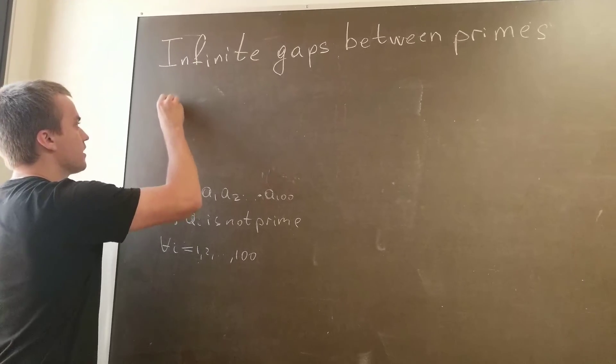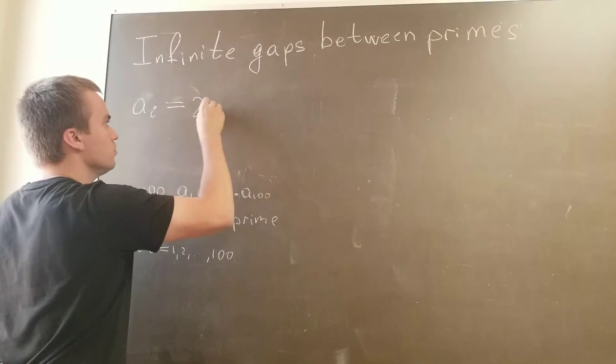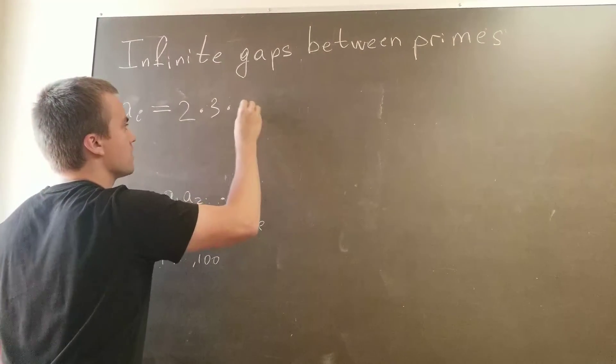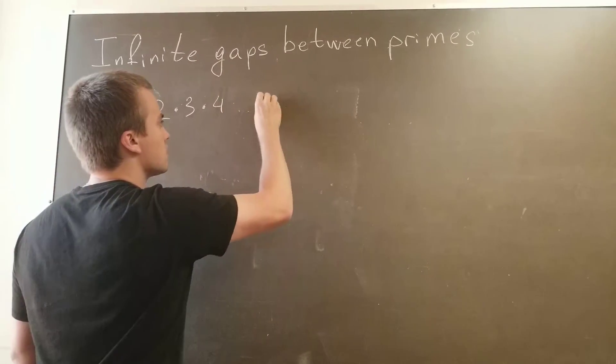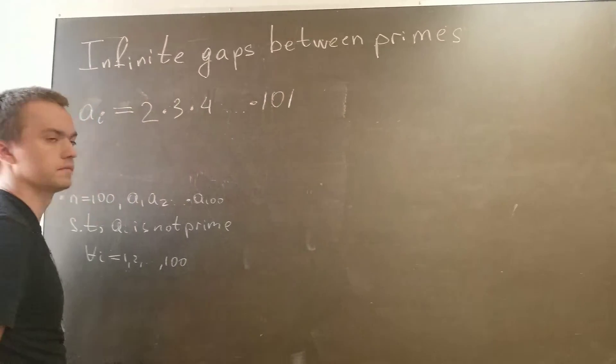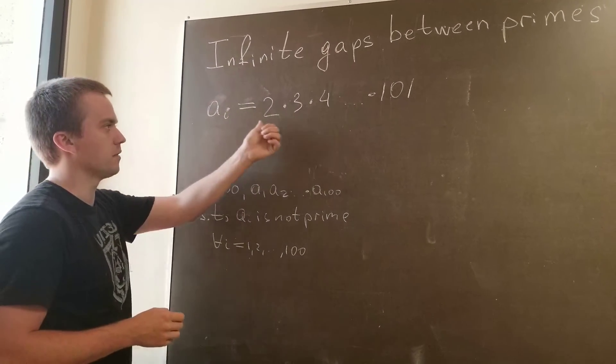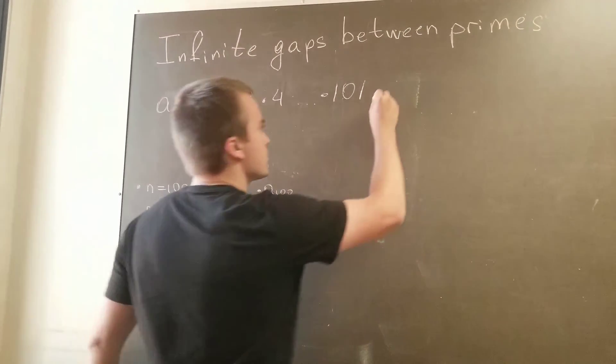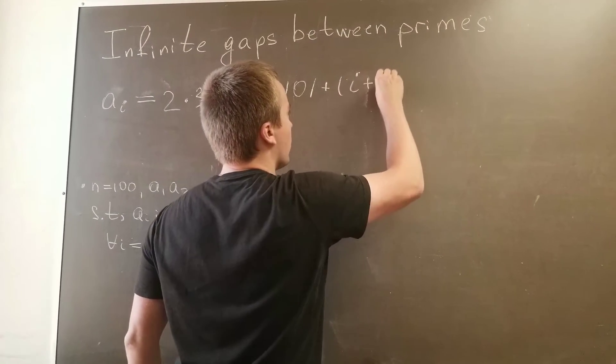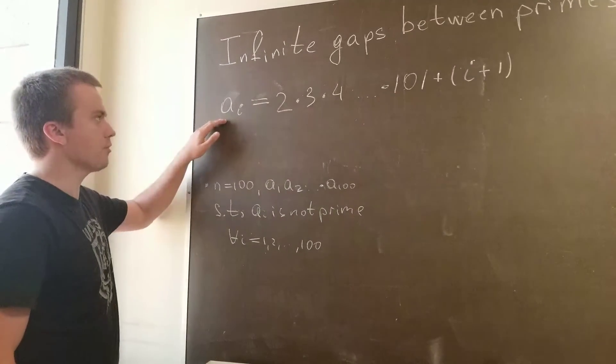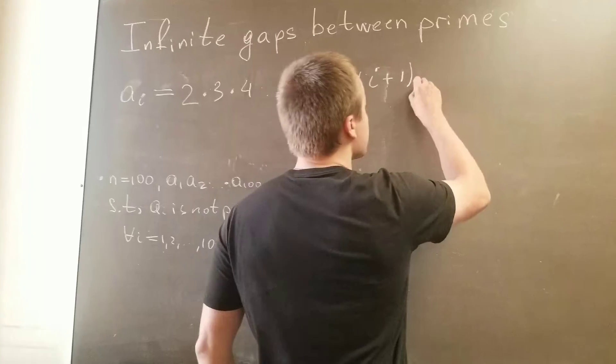Let's make a_i equal to 2 times 3 times 4 times... times 101. This is my a_i, but you can see I have i and i is not involved so far. So what I'm going to do is add i plus 1.